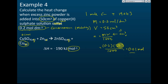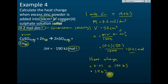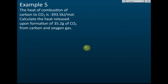One mole of copper displaced releases 190 kJ. We have 0.01 moles of copper displaced, so the heat change equals 0.01 × 190 = 1.9 kilojoules of heat released. So 1.9 kJ of heat is released when this amount of copper sulfate solution is displaced by excess zinc powder.